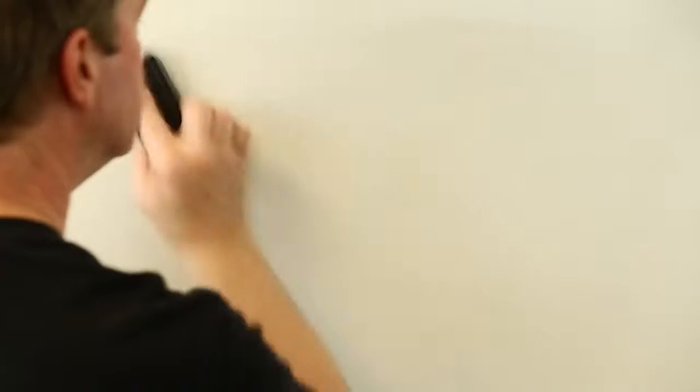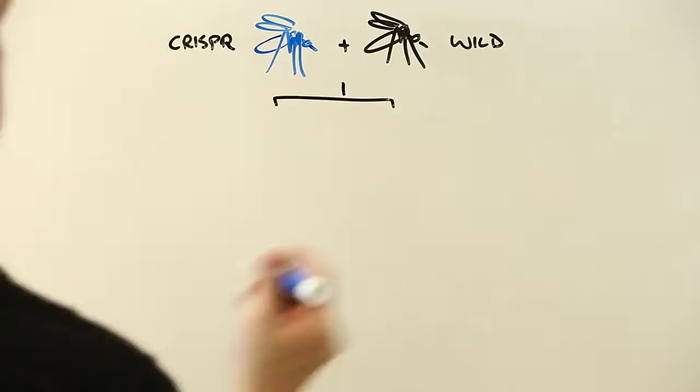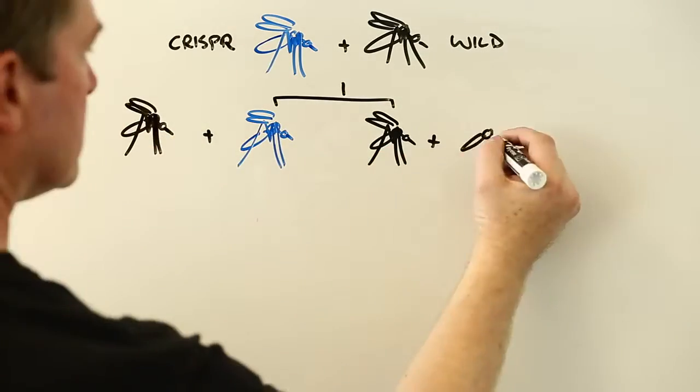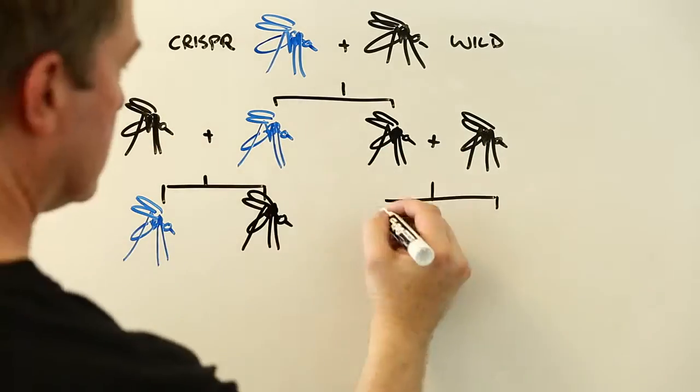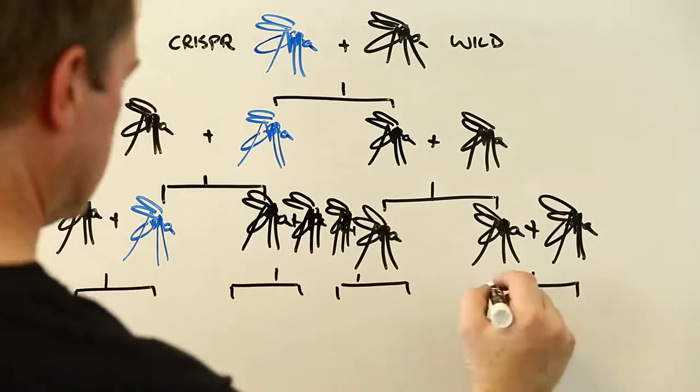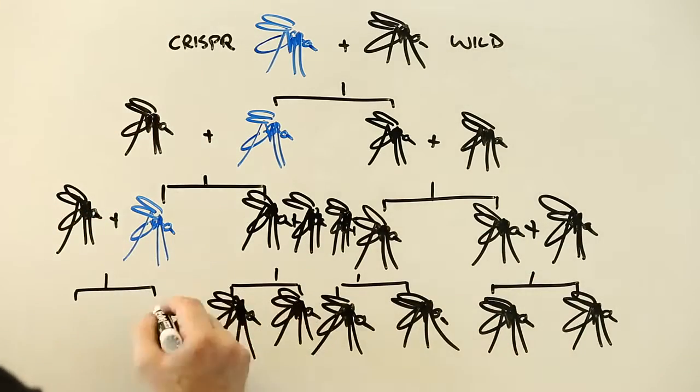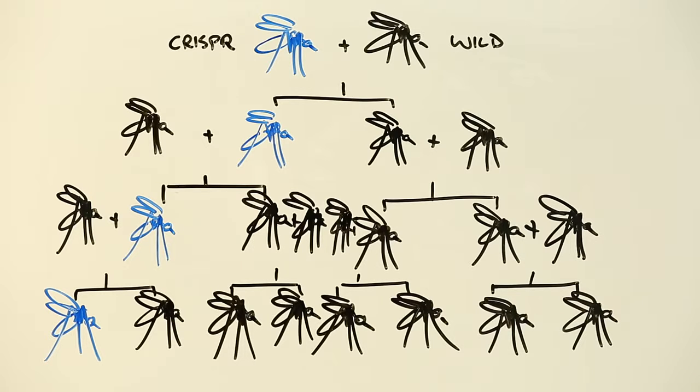Unfortunately, on its own, CRISPR isn't so effective. Every time a CRISPR mosquito mates with a wild one, its genetically modified DNA is diluted down, meaning that some of its offspring will still be able to carry the malaria parasite. And this is where the genius of CRISPR-enabled gene drives comes in.